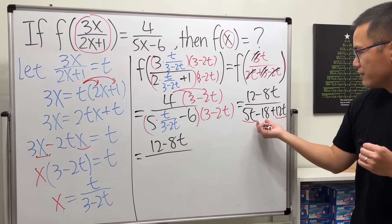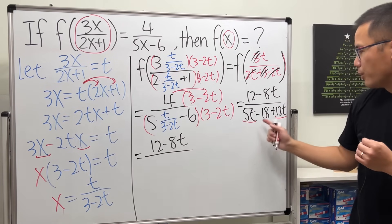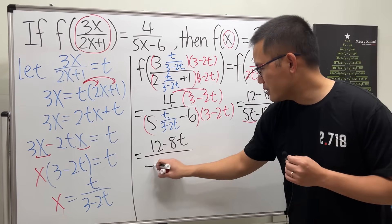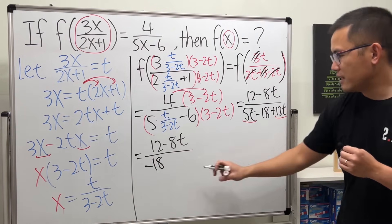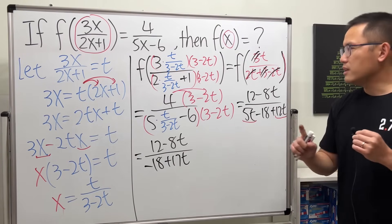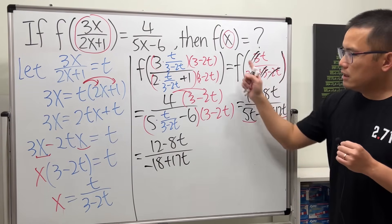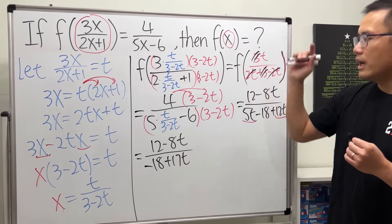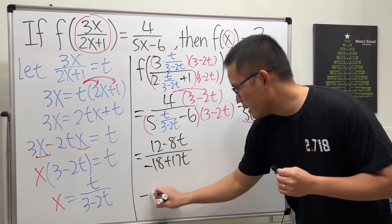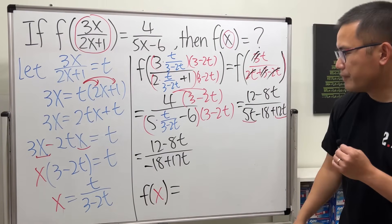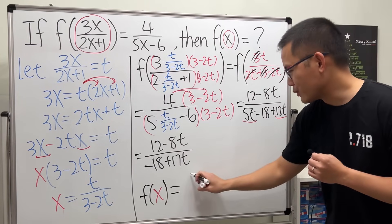It depends on how you like it. I have the t at the end here, so I will put t at the end as well. I'm just going to have negative 18 going first and then 17t afterward, and that's positive 17t. As you can see, f of t is equal to this expression. Now if you want f of x, you can just say f of x is equal to, yeah, it kind of depends how you want to write it.